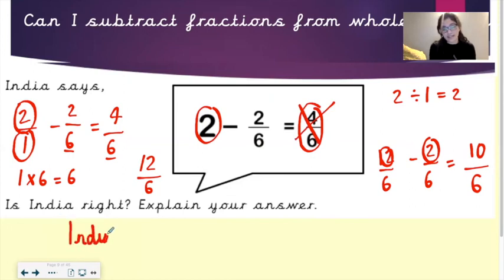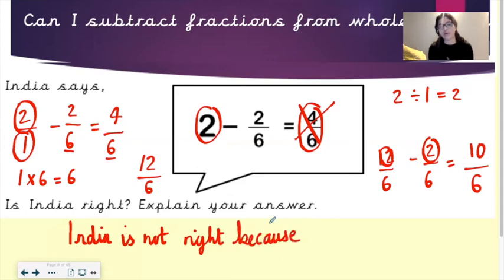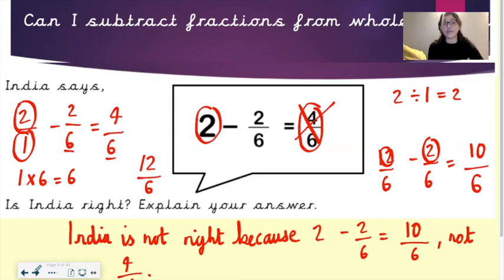So here you could write, India is not right because, and then you could write underneath all of this working out, but I'm just going to write 2 take away 2 sixths equals 10 sixths, not 4 sixths. So that is how I worked it out. If you worked it out another way and you still got the same answer, then that's absolutely fine. Stick to the method that works for you.